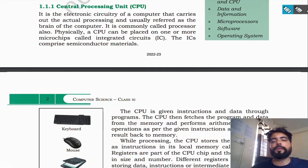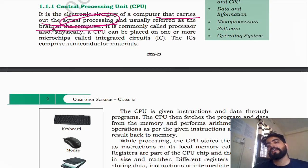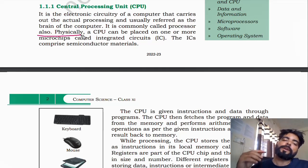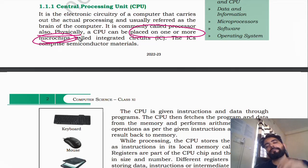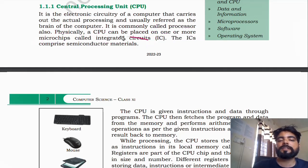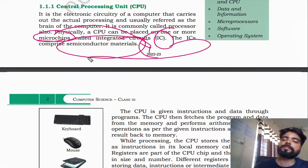It is the electronic circuitry of a computer that carries out the actual processing, and is usually referred to as the brain of the computer. It is commonly called processor also. Physically, a CPU can be placed on one or more microchips, also called integrated circuits or ICs, which are made of semiconductor material.